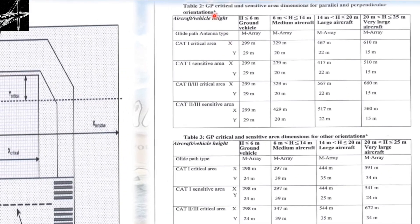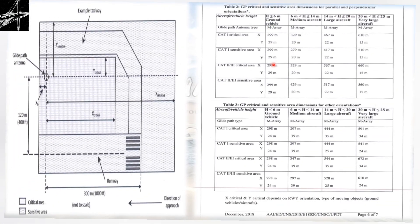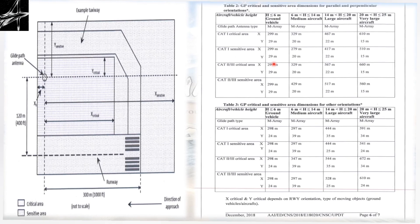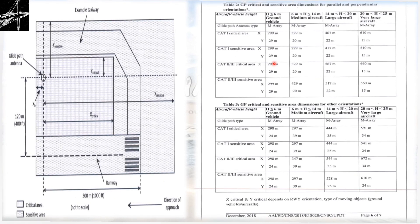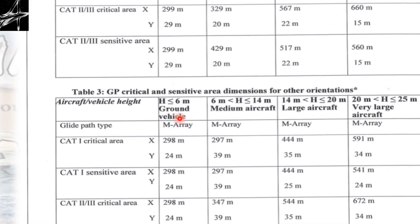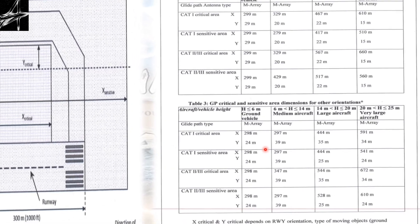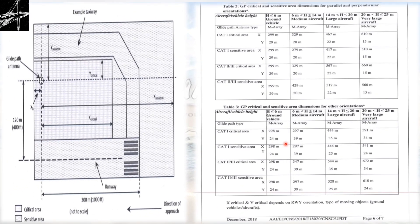We have two tables. The first is the Glide Path Critical and Sensitive Area dimension for parallel and perpendicular orientation — meaning if the antenna setup is placed perpendicular or parallel to the runway centerline. The second table covers Glide Path Critical and Sensitive Area dimensions for other orientations, used when the geometry does not allow placing the antenna in perpendicular or parallel orientation.